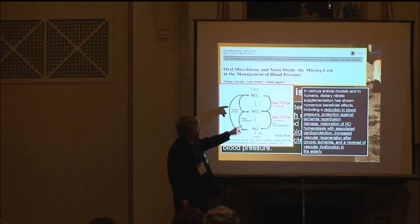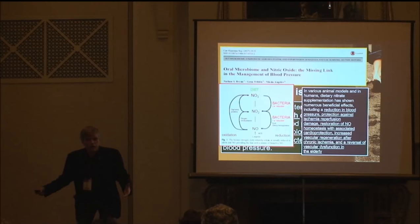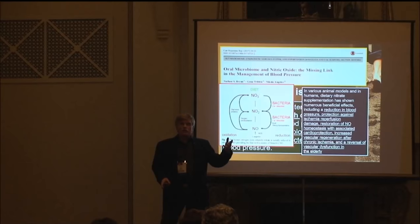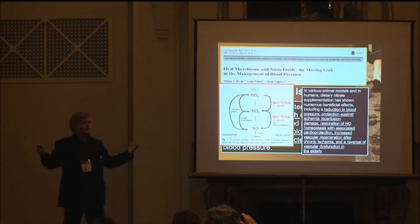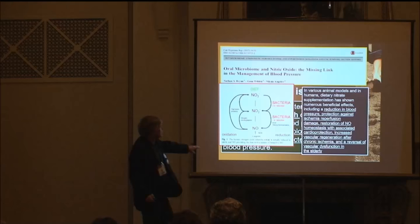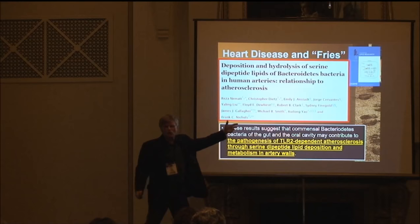Nitrate-reducing bacteria reduce blood pressure, protect against ischemic reperfusion damage, restore nitric oxide homeostasis with increased cardiovascular protection, increase vascular regeneration after chronic ischemia, and reverse vascular dysfunction in the elderly. What is wrong with that? Nothing. Oddly enough, what causes erectile dysfunction? Low levels of nitric oxide. So instead of fixing the issue, people take Viagra — and there's an epidemic of it that never used to exist. How could the species develop and survive if erectile dysfunction was an epidemic? It's because we've been killing off the nitrate reducers.